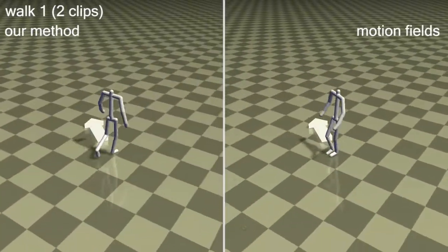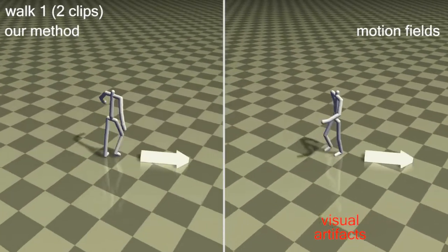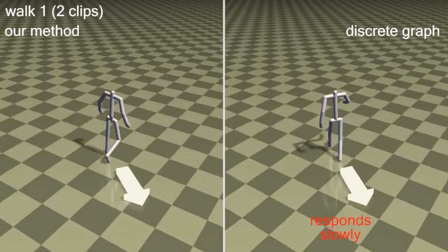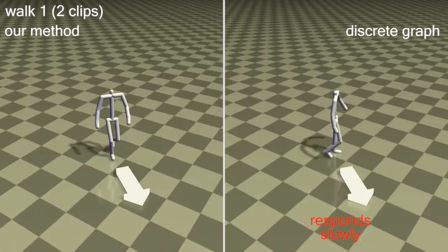This previous method exhibits visual artifacts with small data sets and requires five times more clips to produce good results, while a discrete graph-based controller does not exhibit the responsiveness of our continuous method.